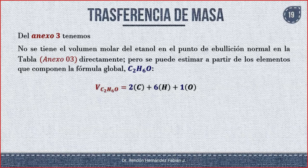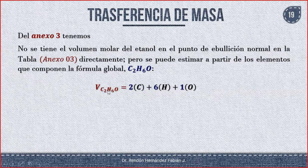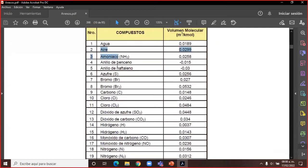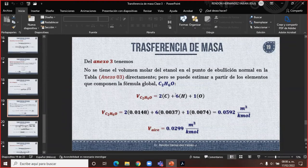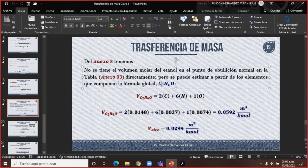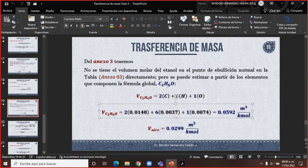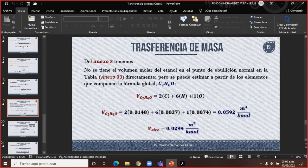Entonces vamos a buscar cada componente por separado. El etanol es C₂H₅OH, que contiene carbono, hidrógeno y oxígeno. Como no aparecía en el apéndice, lo hacemos molécula por molécula. Vamos a buscar: 2 por carbono, 6 por hidrógeno (monoatómico), y 1 por oxígeno.